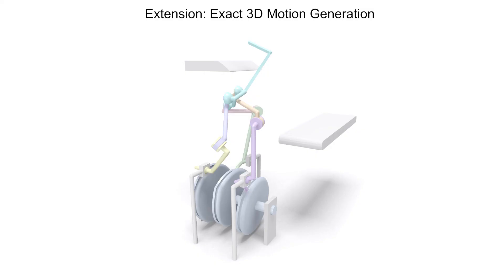Extension: Exact 3D motion generation. We generalize our 3D cam linkage mechanism for exact 3D motion generation, which consists of 3 3D cams and 8 links. The generalized mechanism can exactly control both the position and orientation of the object along the whole path.